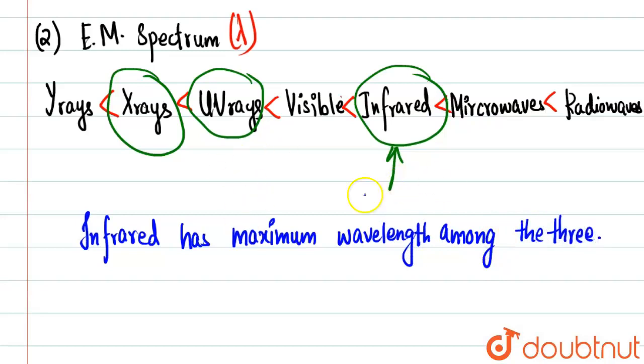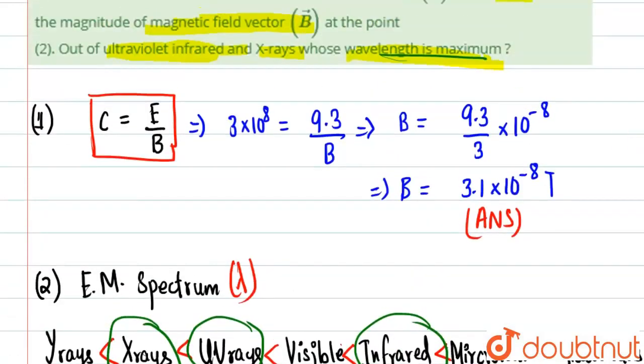This is the answer of part two, which is infrared. Answer of part one is 3.1 times 10 to the power minus 8 Tesla. Thank you.